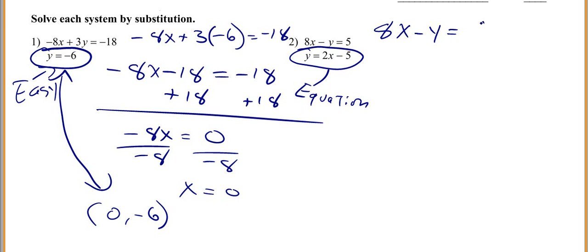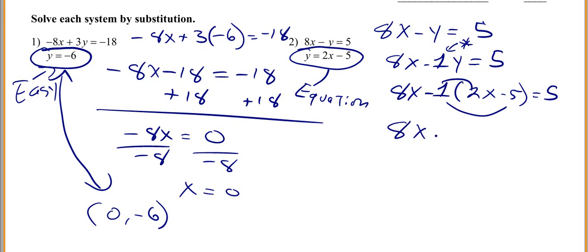You have 8x minus y equals 5, which is the same thing as 8x minus negative 1 times y equals 5. There is a reason I put that negative 1 there, and that is because when we substitute where we see a y, we are going to write this equation. 8x minus 1 times 2x minus 5 equals 5. You have got this negative 1 and we are going to want to distribute it.